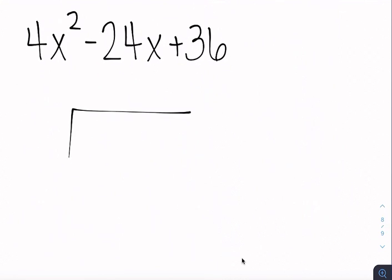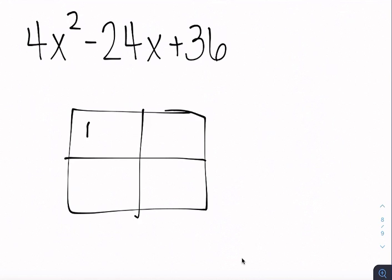All right. I'm going to start by making my generic rectangle. And again, I can put my 4x squared there and my 36 there.